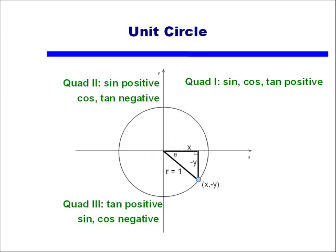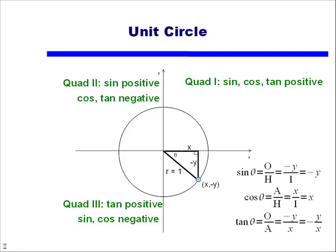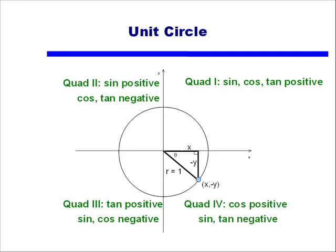Continuing to quadrant 4, we still have our reference angle between the terminal side and the x-axis. Now x is positive and y is negative. The radius is still 1. Sine of theta in quadrant 4 — when the angle is between 270° and 360° — equals −y over 1, or −y. Cosine equals positive x over 1, or x. Tangent equals opposite over adjacent, which is −y over x. So in quadrant 4, cosine is positive, and sine and tangent are negative.